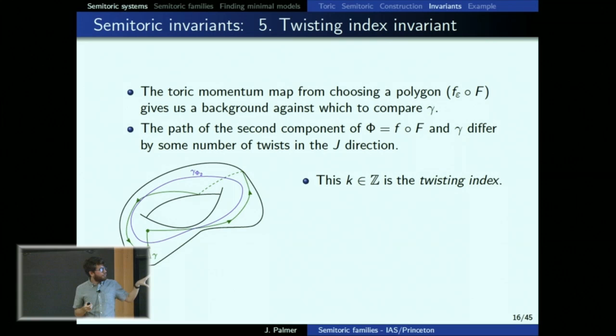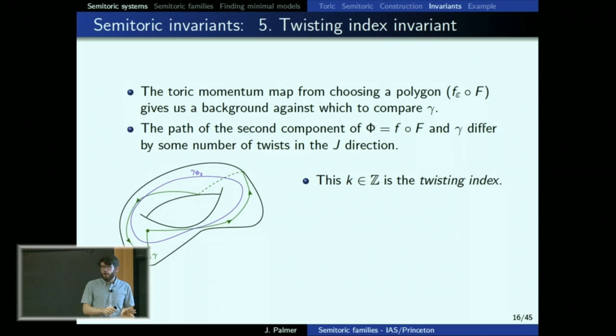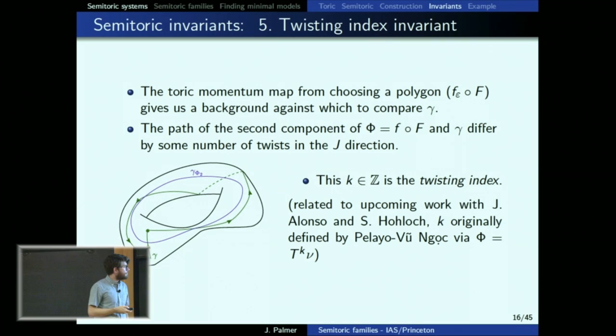The twisting index is a subtle invariant — already hard to define. It's an integer once you choose a polygon. There are all these different polygons you can choose, and depending on the polygon you get different integers — it's an assignment of an integer to each polygon. You just need to give it for one polygon and the group action tells you what it should be for everyone else.